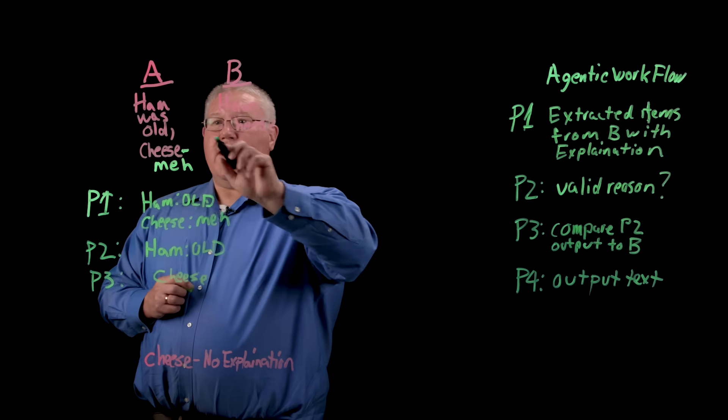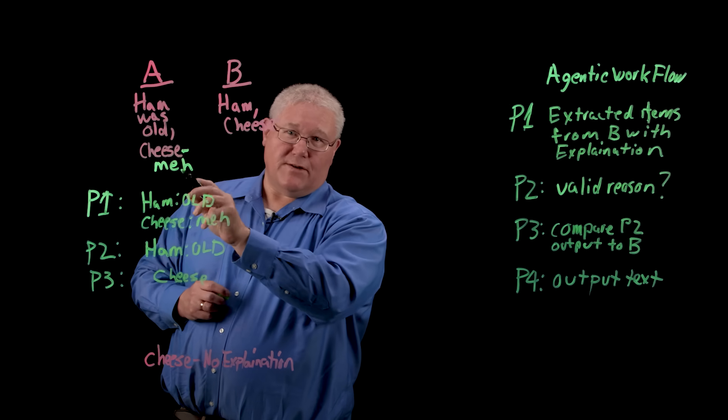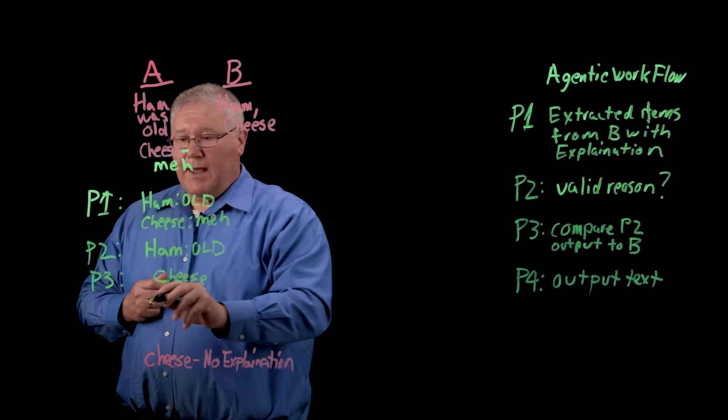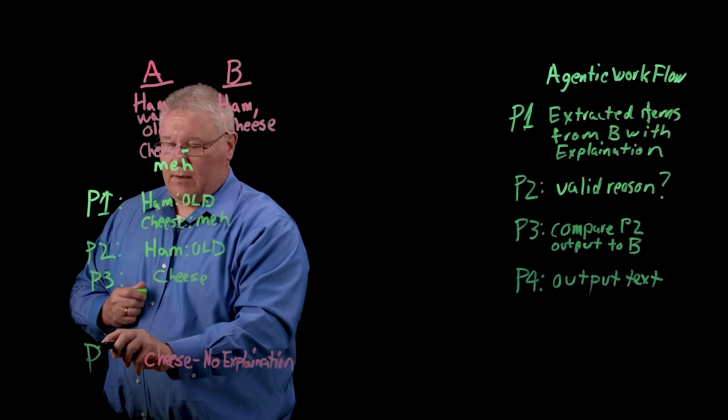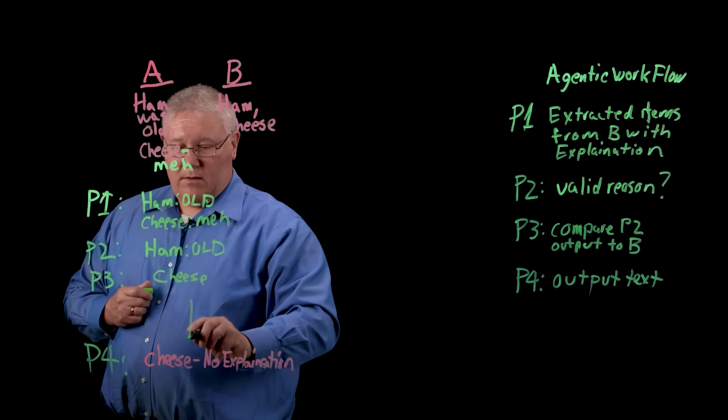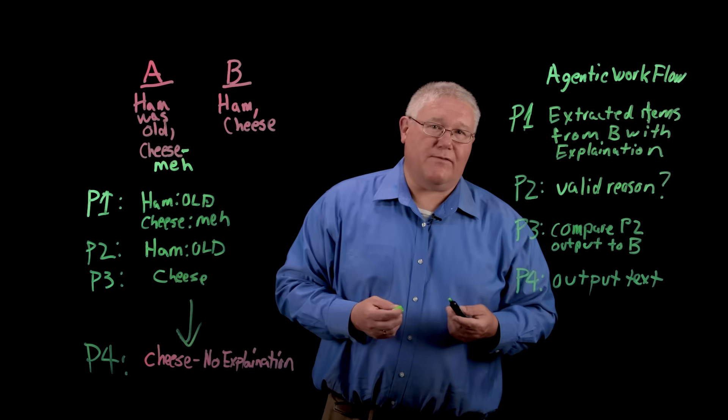Because again, cheese is the item in here without a valid explanation for not being filled. And then the fourth would basically be output this into the final format.